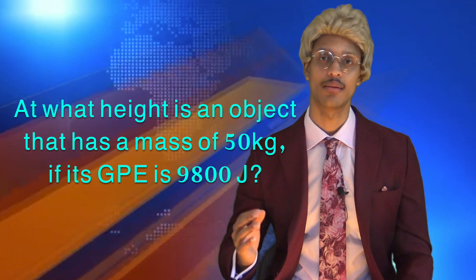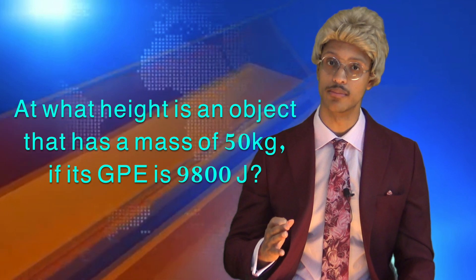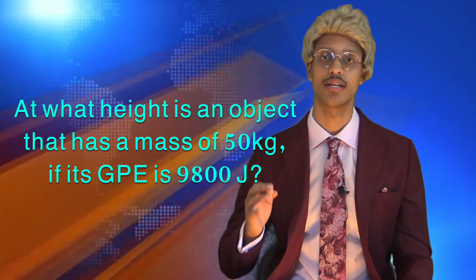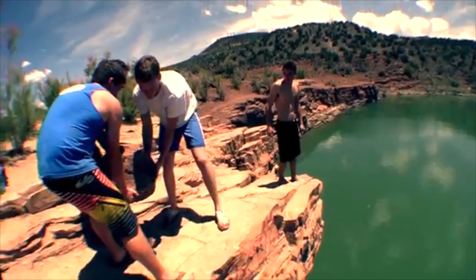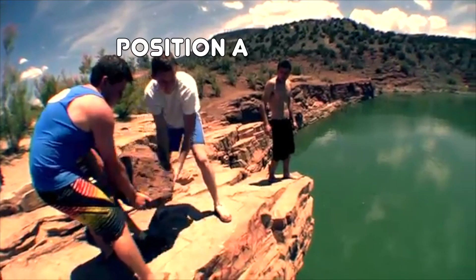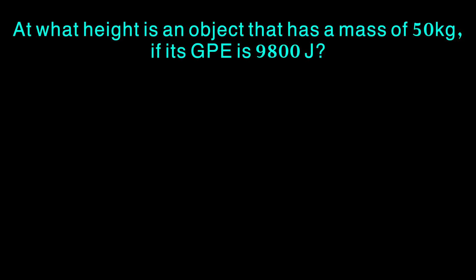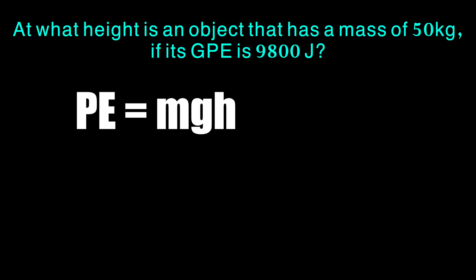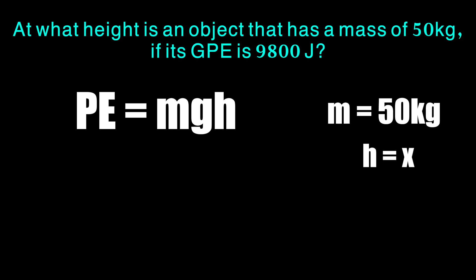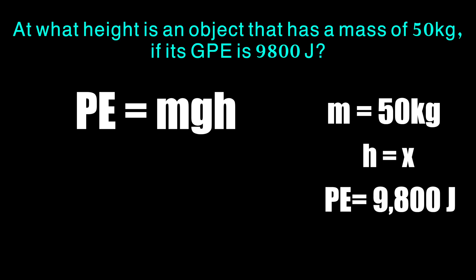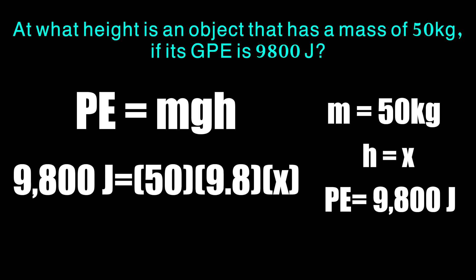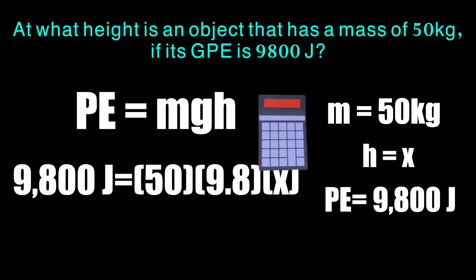At what height is an object that has a mass of 50 kilograms if its GPE is 9,800 joules? Once again, we can solve this by utilizing the information given. They already gave us the potential energy; we are solving for the height. Our mass is 50 kilograms, and our potential energy is 9,800 joules. If we plug that information into the formula and solve for the variable — the height — we will successfully have our answer.